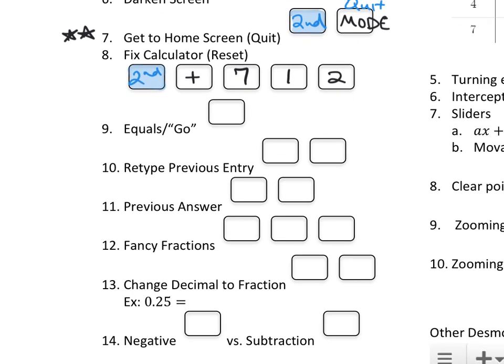This next one's super easy. Anytime you want to press go or press enter or equals, you press the button that says enter, which is the one that we've, I'm pretty sure we're familiar with that one. But anytime you want to select yes or go, that's the enter button.